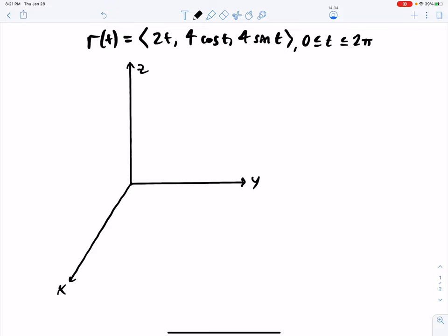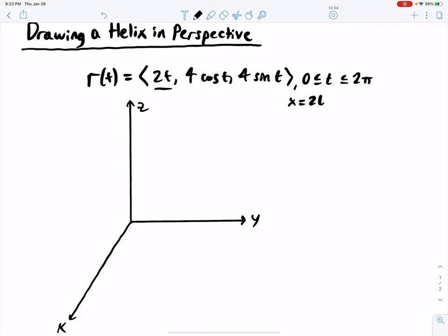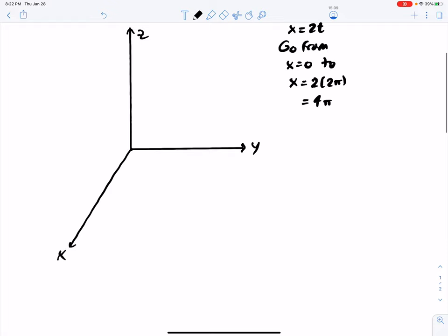So, next thing we need to do is draw the ends. Imagine like the top and the bottom of a soup can when you take an infinitely long cylinder, but you chop it off through planes that are perpendicular to the axis. Since x equals 2t, we're going to go from x equals 0 to x equals 2 times 2π, which is 4π.